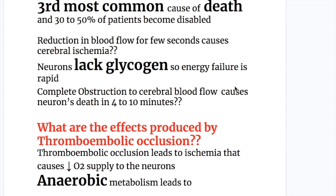Reduction in blood flow for just a few seconds causes cerebral ischemia, because neurons lack glycogen, so energy failure is rapid. Complete obstruction of cerebral blood flow causes neuron death in 4 to 10 minutes.